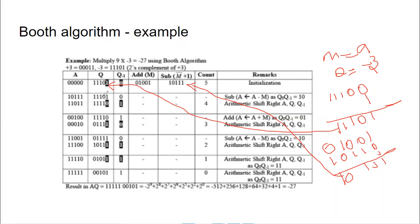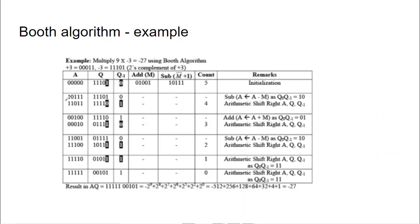The count is initialized to 5 because there are 5 bits in the multiplier. Q-minus-1 is 0. Now check Q-naught and Q-minus-1: Q-naught is 1 and Q-minus-1 is 0, so we do A = A minus M. A is 0 0 0 0 0, and to subtract M we add the 2's complement of M (1 0 1 1 1), giving A = 1 0 1 1 1. Now perform the arithmetic right shift on A, Q, and Q-minus-1 together.